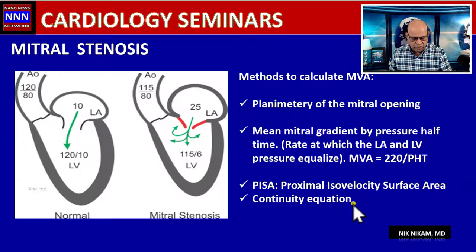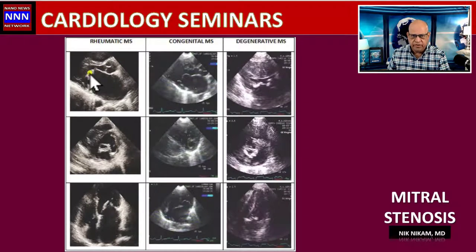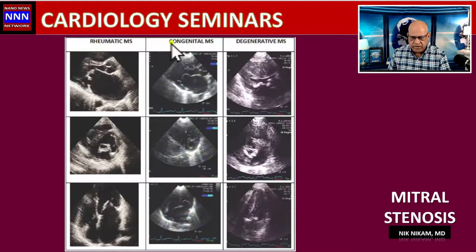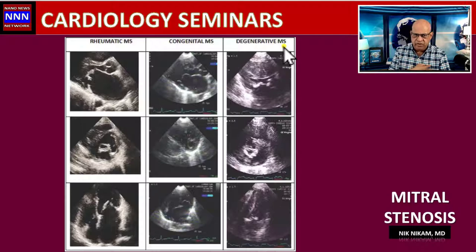Mitral stenosis can result from a variety of causes. The most common is rheumatic mitral stenosis, characterized by thickening of the leaflets, fibrotic changes, adhesions, nodules, and restricted mobility with a dome-shaped appearance during left atrial systole. Congenital mitral stenosis interestingly has thin leaflets but also causes doming during atrial contraction. Degenerative mitral stenosis is commonly seen in elderly patients with heavy calcification of the mitral annulus and leaflets with restricted mobility and adhesions.